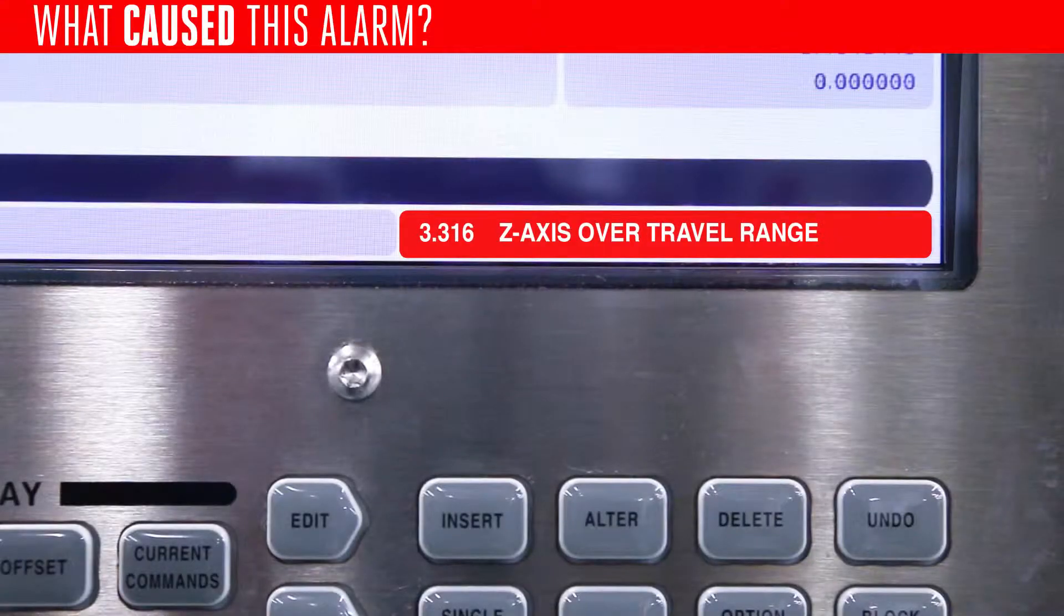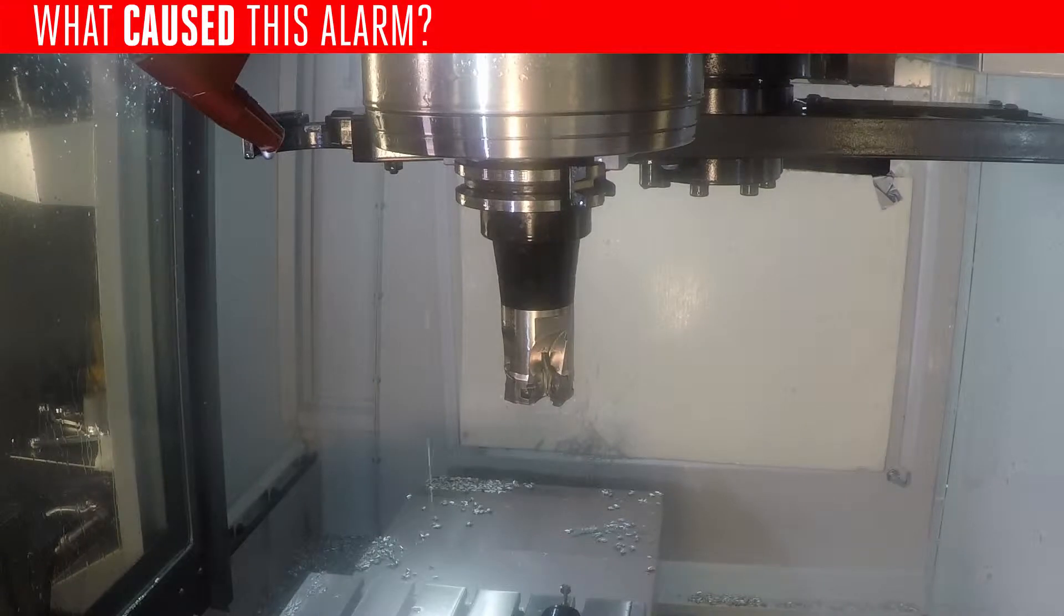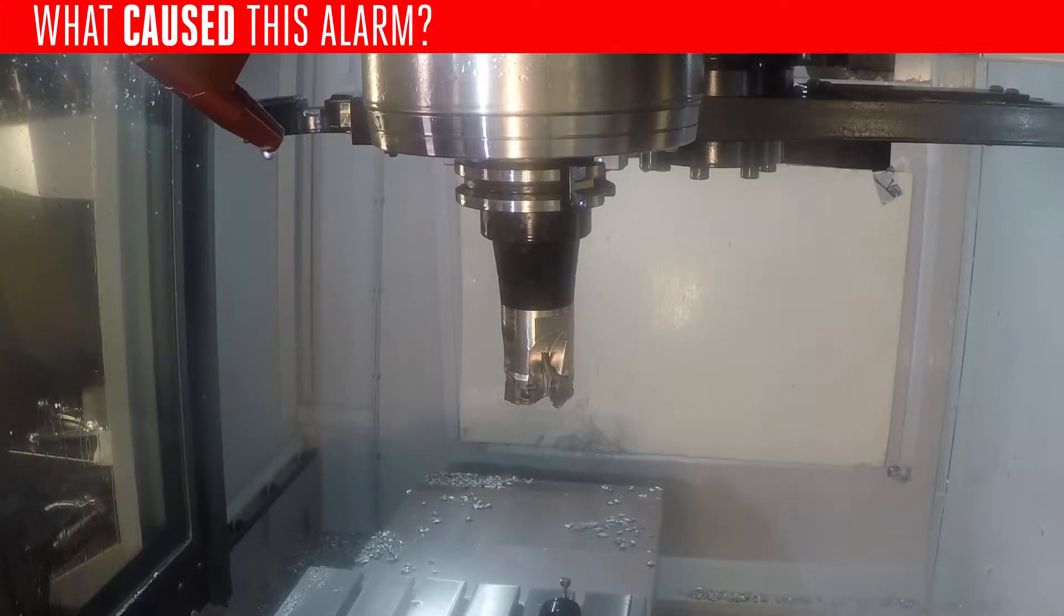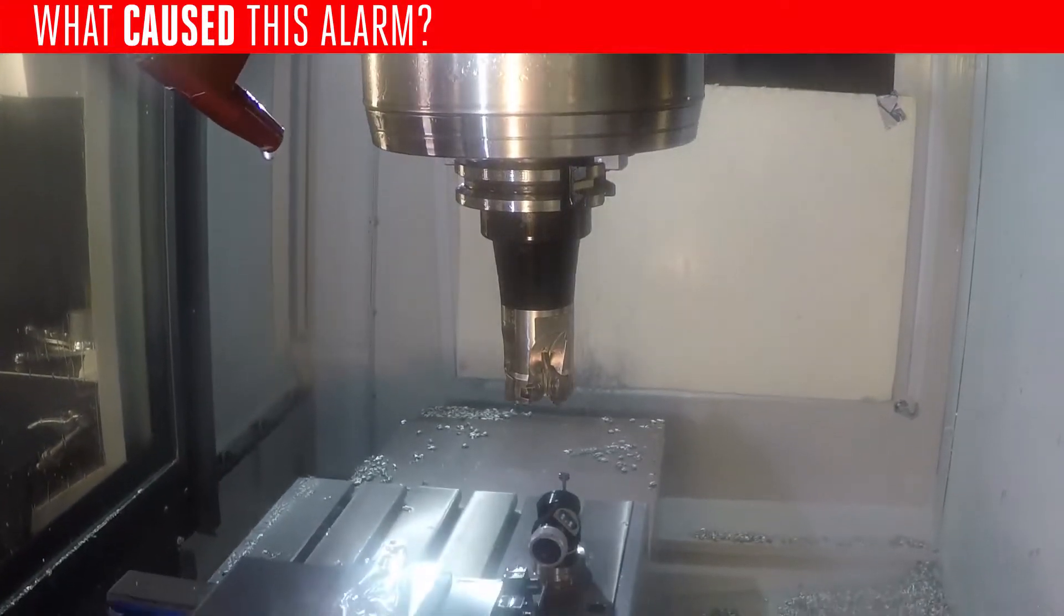Alarm 3.316 occurs when the Z-axis is commanded beyond the plus or minus Z travel limits, either as an interpolated move or as a rapid motion.